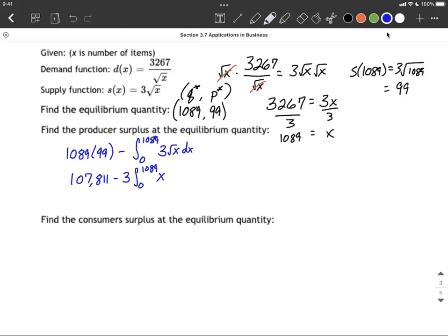But this time I'm going to rewrite that x, instead of having a square root over the top, I'm going to write it as raised to the one-half power. So I haven't integrated yet, I'm just rewriting it so that I can utilize the power rule. Alright, from here, we bring along our 107,811, minus the 3 comes along.